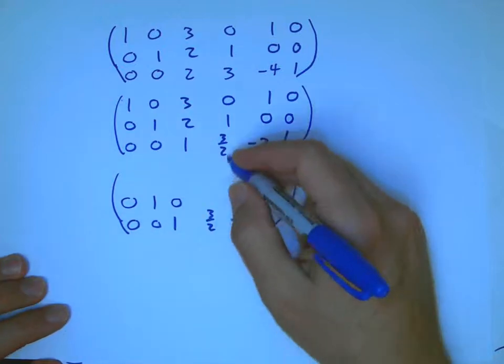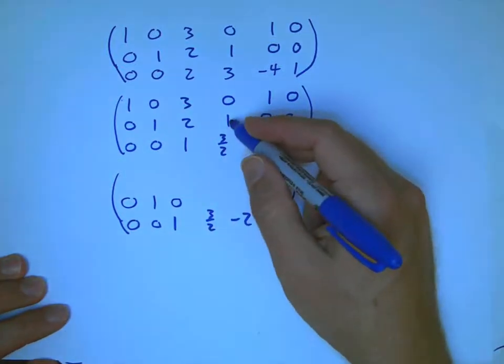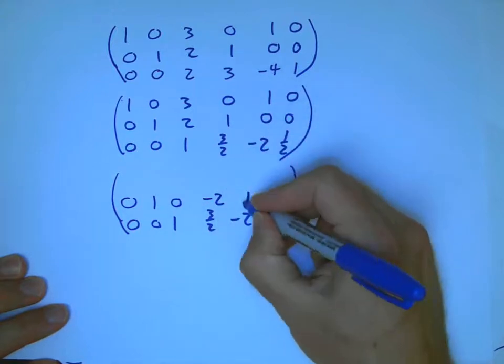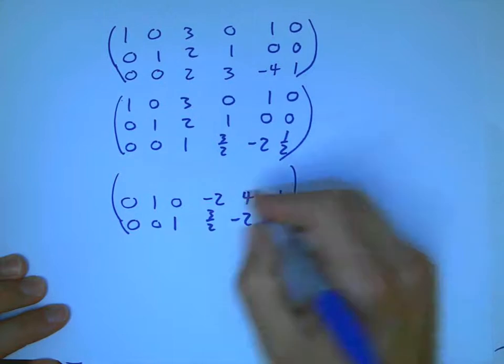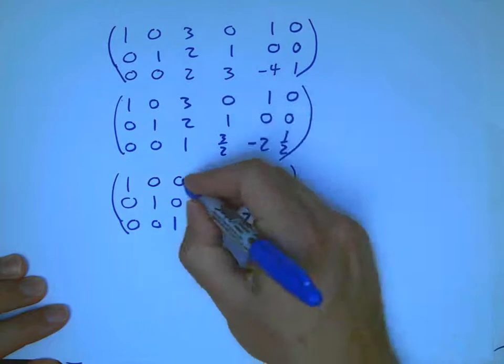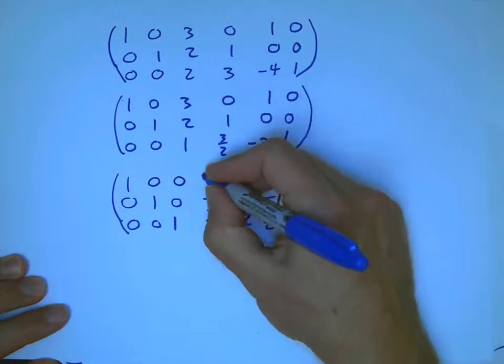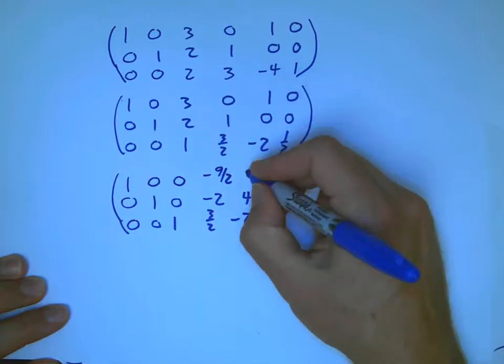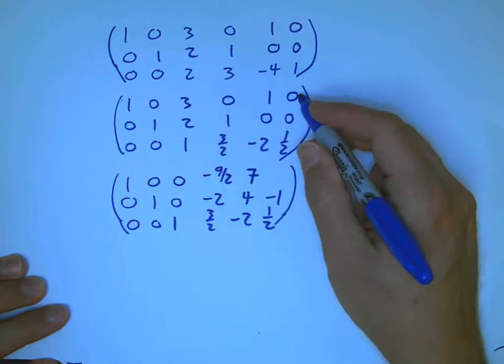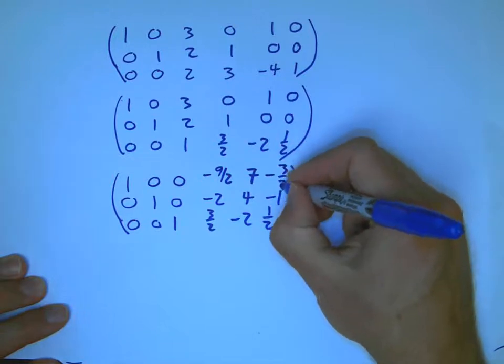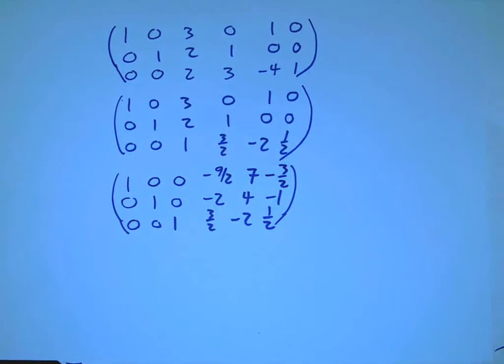Now, I just need to take twice the bottom row, subtract it from the middle row. And that's going to be 1 minus 3 is minus 2. That's going to be plus 4. That's going to be minus 1. And then, 3 times the bottom row and subtract it from the top row. So, that's going to be minus 9 halves. 1 plus 6 is 7. And minus 3 halves. So, let's hope that's correct.